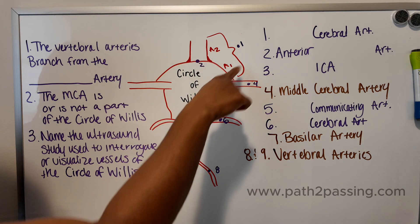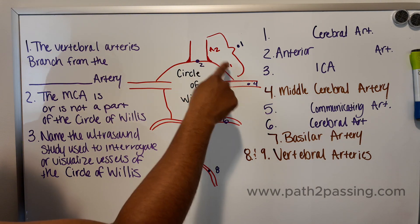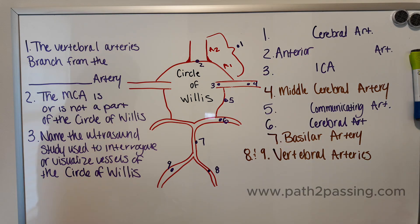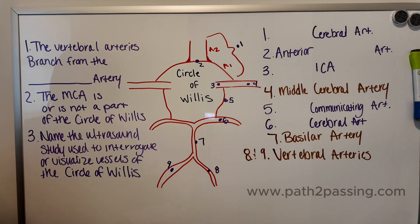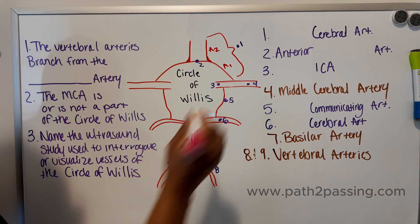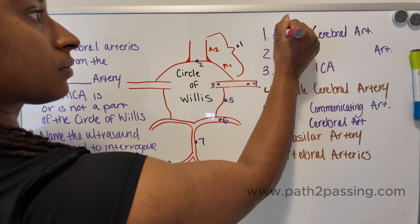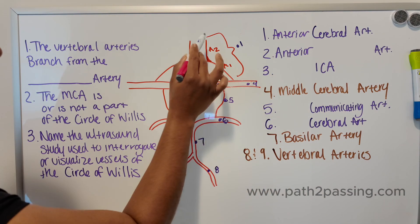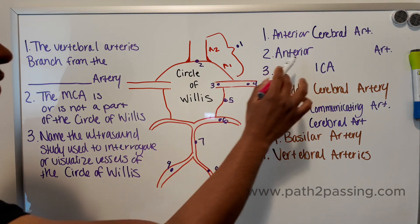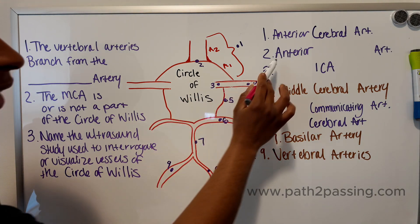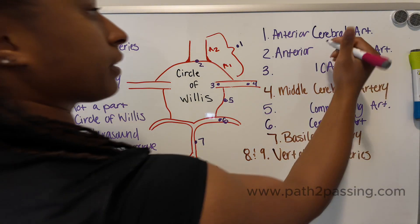Starting at the top, vessel one and vessel two. Vessel one is your anterior cerebral artery — we'll go ahead and put 'anterior' on this right side. And vessel two is also anterior: that is your anterior communicating artery.